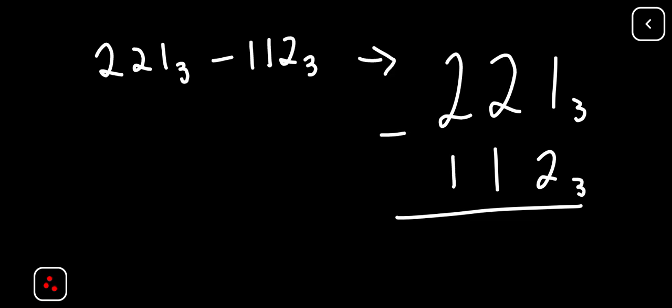So if we subtract this, remember that 1 cannot subtract 2. So 1 has to borrow from these 2, and whatever he's borrowing is based on the base. So he gives to him 3. We're adding 3 to this 1 here, and 3 plus 1 is 4. This guy becomes 1, it gives to him 3. And if we add 3 to this 1, it becomes 4. So that means we have 4 minus 2 becomes 2.